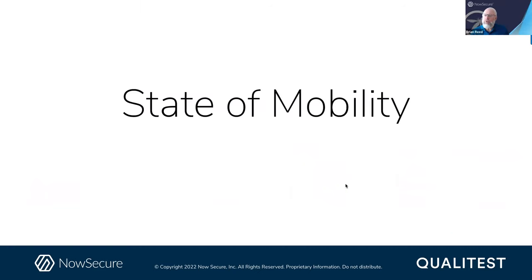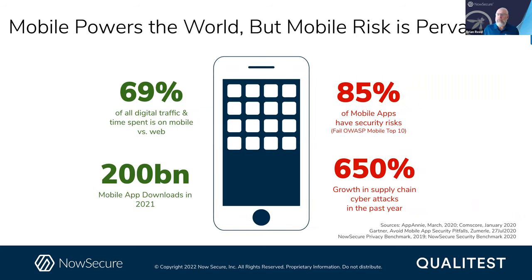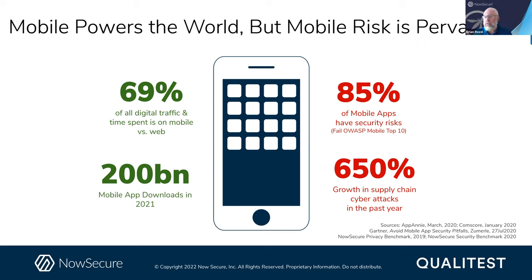Moving on — we're going to talk about what's the state of the world today. Every month we talk about different angles of what's going on in the market. What's really phenomenal now is that mobile dominates all digital time and traffic on the internet, according to Comcast data. 70% or more of all internet traffic is now on mobile. I actually heard 80% yesterday at a federal event in Washington D.C., where the head of security at the FBI was talking about traffic patterns exceeding 80% now.